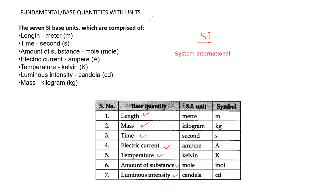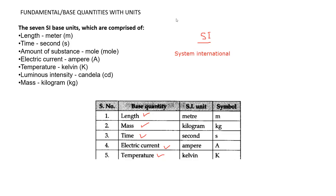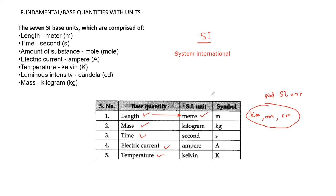There are seven but you only need to learn the first five with their units. The SI unit of length is meter — length can be in kilometers, millimeters, or centimeters, but those are not SI units. The SI unit is meter only, so if a length is given in any other unit you must always convert it to meters.